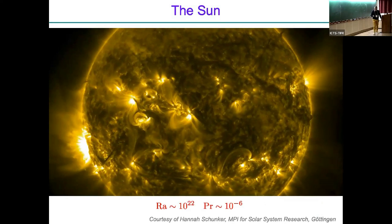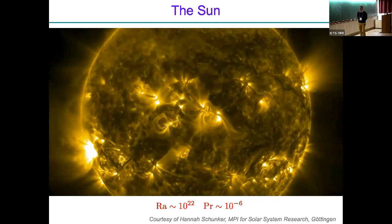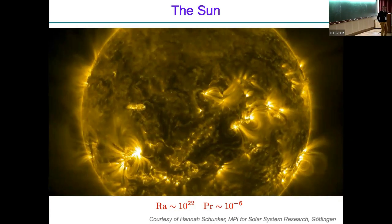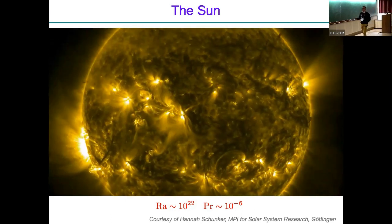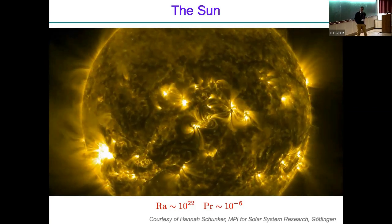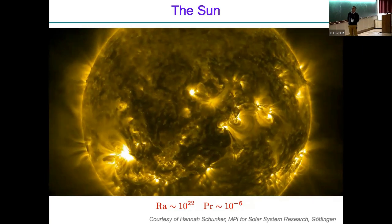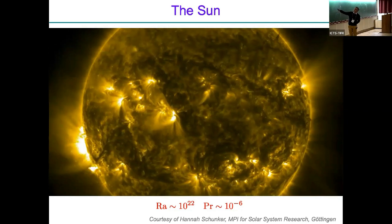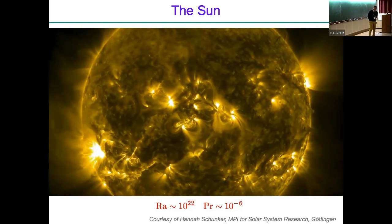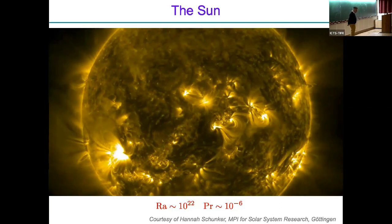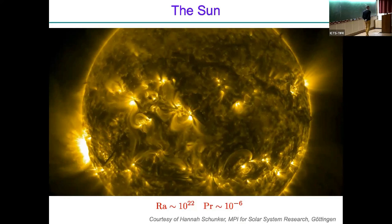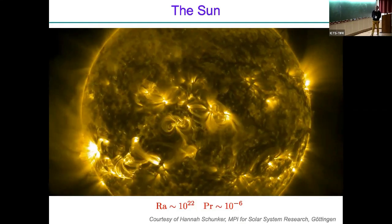Let me start with a prominent example of convection in a natural flow. This is a satellite image movie of the sun. In the outer 30 percent of the solar interior we have turbulent convection going on at an extremely high Rayleigh number — meaning the turbulence is very vigorous — and at an extremely low Prandtl number. You see how convection manifests, particularly if you look at these grainy regions at the surface. Close to the surface, convection becomes manifest in the form of granules and super-granules.